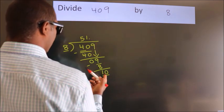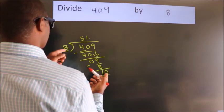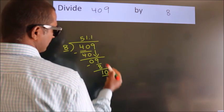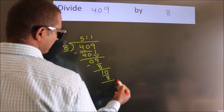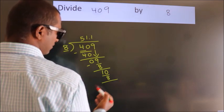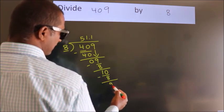A number close to 10 in 8 table is 8 once 8. Now we subtract. We get 2.